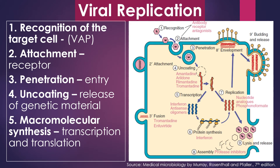The viral replication includes several steps, starting with the recognition and attachment of the virus to the target cell. It is achieved with the help of viral attachment proteins that are present on the surface of the virion capsid, binding to the receptors on the cells. The viral attachment proteins are specific glycoproteins of enveloped viruses. For example, the hemagglutinin of influenza A virus binds to the sialic acids expressed on many different cells of the host, and it has a broad host range and tissue tropism.